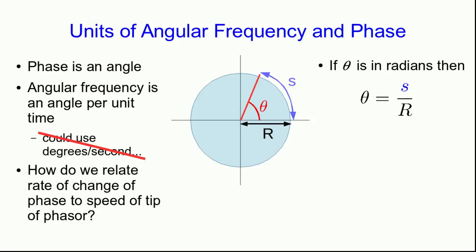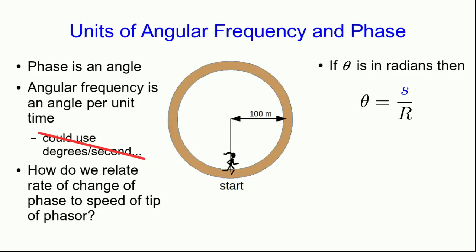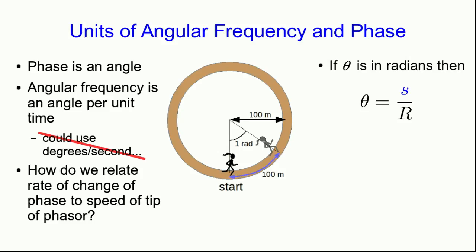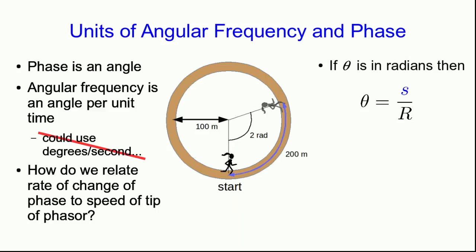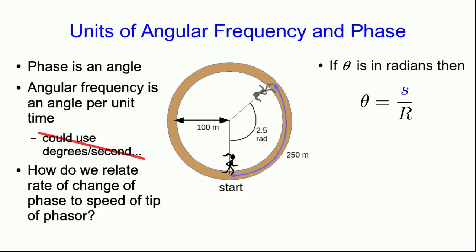If we measure angles in radians, the angle is just arc length divided by radius — that's the definition of the radian. For example, a runner on a circular track of radius 100 meters: when she's gone 100 meters she's traveled one radian, at 200 meters she's gone two radians, and at 250 meters she's gone 2.5 radians. Note that radians are unitless because you're dividing a length by a length — the label 'radian' just explains how the angle was calculated.